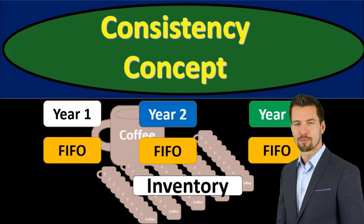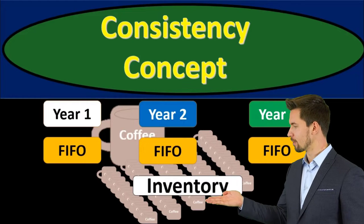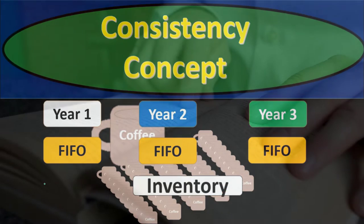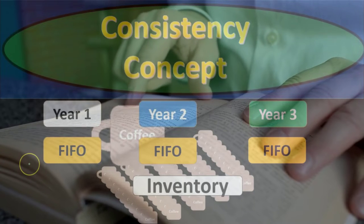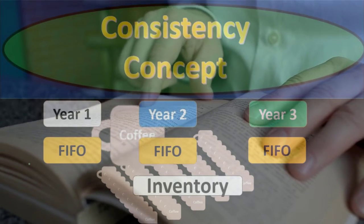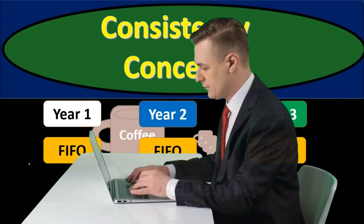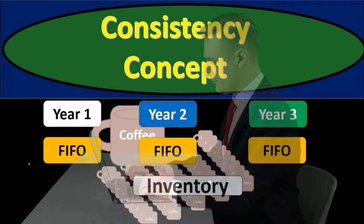In this presentation, we will discuss the consistency principle as it relates to inventory and inventory assumptions. First, we're going to define the consistency principle and then apply it to a flow assumption, such as whether we use first in first out, last in first out, or an average inventory system.